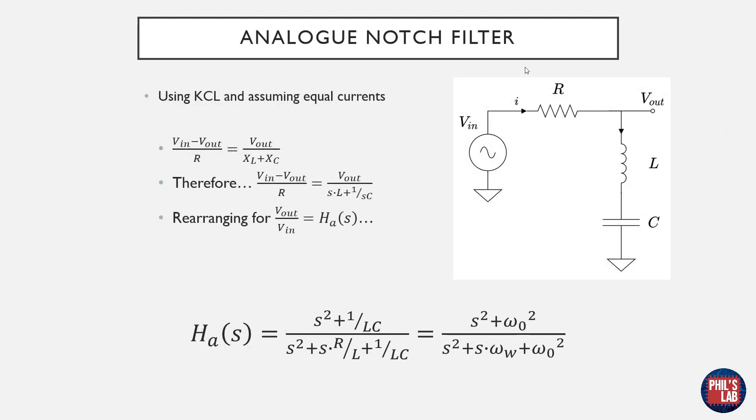As usual we start off with an analog prototype to derive our differential equation which we then need to discretize and turn into a difference equation which we can implement in software. So a notch filter is actually an RLC circuit in the analog domain. We have a resistor and essentially this potential divider formed by this resistor and an inductor and capacitor in series.